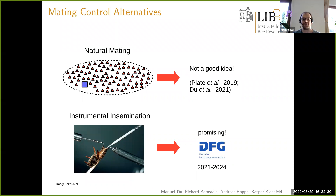One alternative is natural mating, where one cannot select on the drone side but can still select for the best queens. However, several simulation studies have shown this is not a good idea — genetic progress will be unsatisfactory under any circumstances, and in many cases progress can stagnate completely after just a few generations.